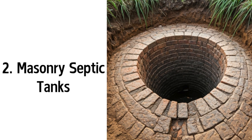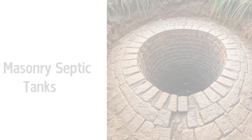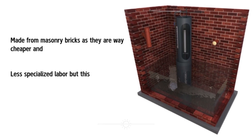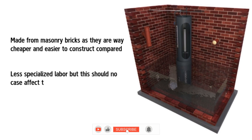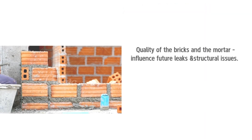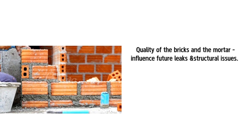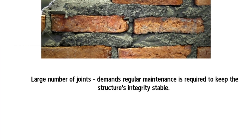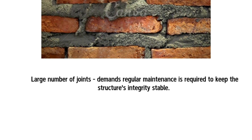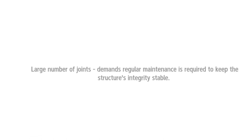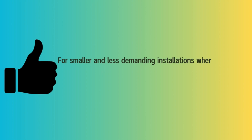2. Masonry Septic Tanks. Septic tanks made from masonry bricks are much cheaper and easier to construct compared to other types. Brick septic tanks require less specialized labor, though this should not affect the quality of construction. The quality of the bricks and mortar used influences future leaks and structural issues. Given the large number of joints in the masonry walls, regular maintenance is required to keep the structure's integrity stable. Brick septic tanks are best suited for smaller, less demanding installations where budget is a primary concern.